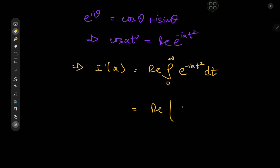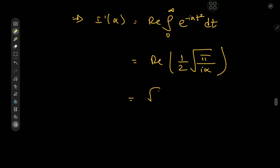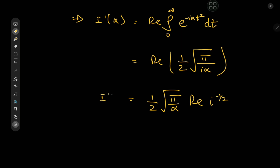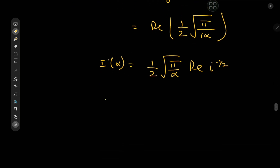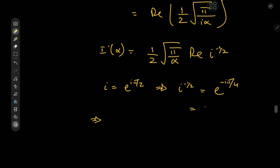This evaluates to the real part of one half of root π divided by the coefficient of t squared, which is i times α. So we're interested in root π over two times the real part of i to the negative one half. We know i equals e to the i π over two by Euler's formula, which implies i to the negative one half equals e to the negative i π over four, which is cosine π over four minus i times sine π over four. So the real part is one over root two.